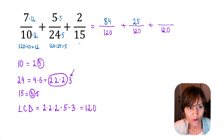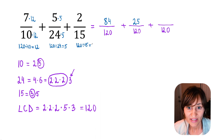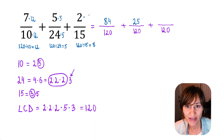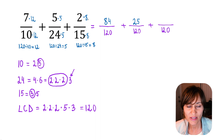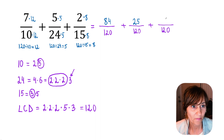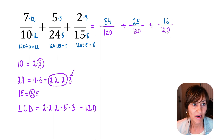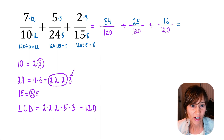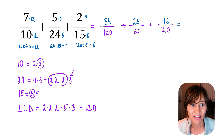The third fraction: 120 divided by 15 is 8. So we are multiplying the numerator and denominator by 8. 2 times 8 is 16, and 15 times 8 is 120. We rewrote each fraction so we have the same common denominator of 120.